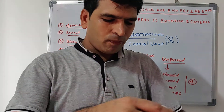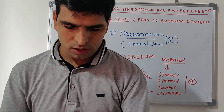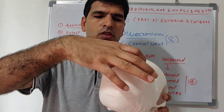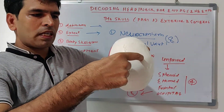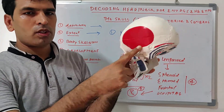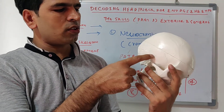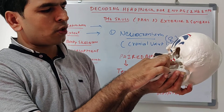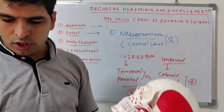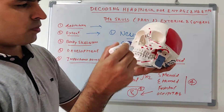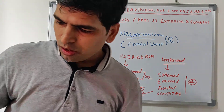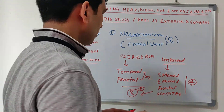Looking at the skull: frontal bone is one, occipital bone is one, there are two parietal bones, two temporal bones. This is the sphenoid bone, and behind the nose above this is the ethmoid bone. This is all about the neurocranium.